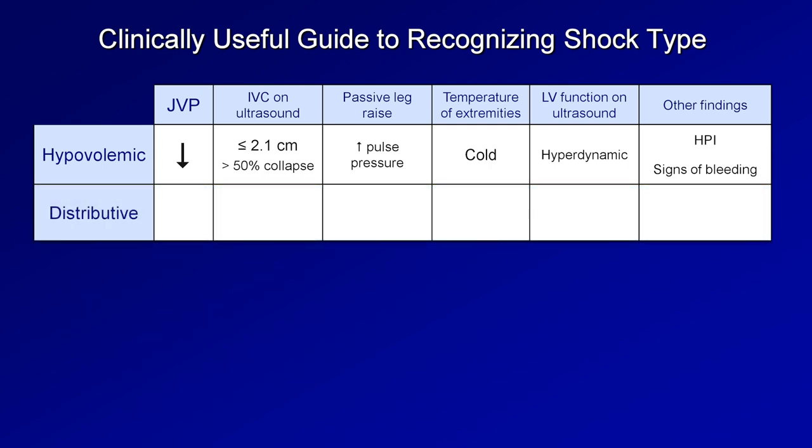In distributive shock, the JVP is also low, the IVC is also non-distended and collapsible, pulse pressure increases with leg raise, and the LV is usually hyperdynamic. However, the temperature of the extremities is usually warm. A non-insignificant portion of critically ill patients with septic shock develop a concurrent sepsis-induced cardiomyopathy from elevated circulating cytokines and profound acidemia. So if you strongly suspect septic shock, never completely change your mind based solely on low LV function or cool extremities — rather suspect more than one shock type may be occurring simultaneously.